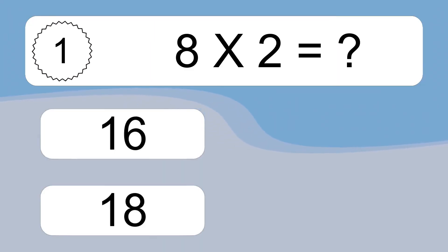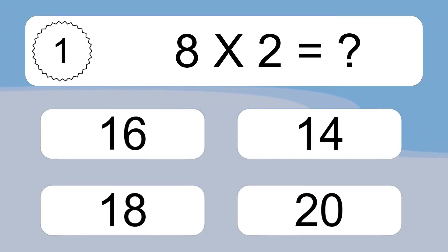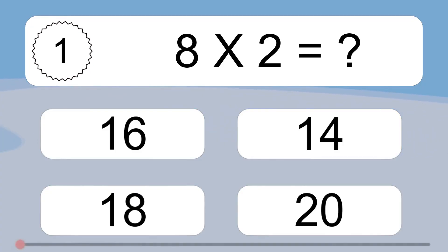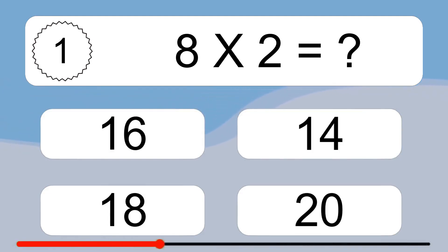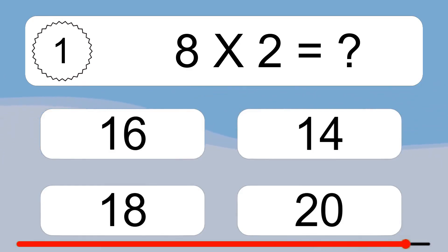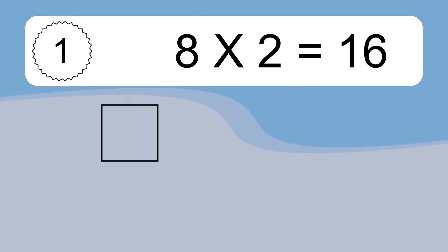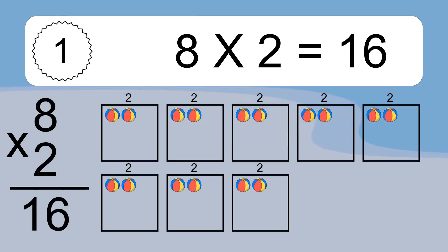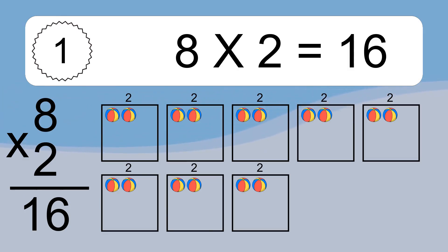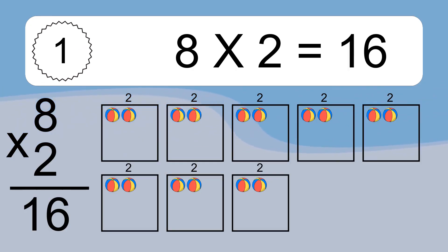8 times 2 equals what? 8 times 2 equals 16. We have 8 boxes, and each box has 2 colorful balls inside. If you count all the balls in all the boxes together, you will have 8 times 2 balls. This equals 16 balls.